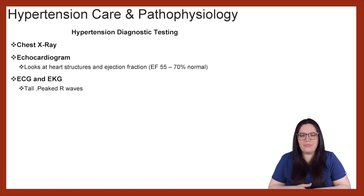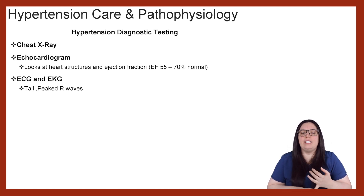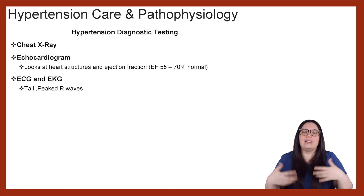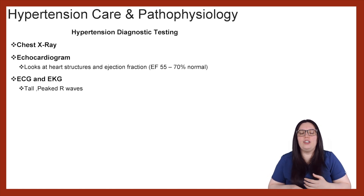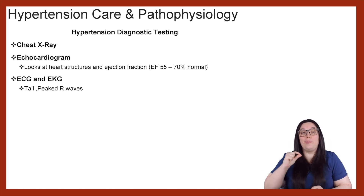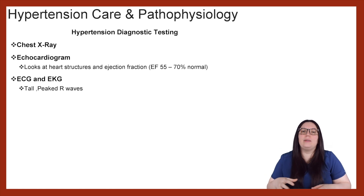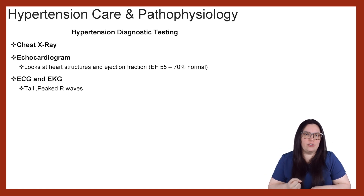And then lastly, we can do an ECG, also known as an EKG — an electrocardiogram. You could potentially see tall peaked R waves, depending on how severe that vasoconstriction is when it comes to hypertension.